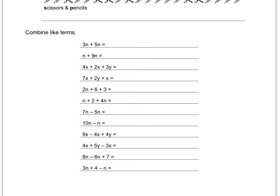On this bottom area, let's try this last one: 3N plus 4 minus N. I like to use the shape method, so I'll put a box around the 3N and the N because they both have N's, and a triangle around the 4. Combining the boxed N terms, what's important is not to miss that that's a negative N. So 3N minus N equals 2N, not 4N. Plus 4 — there's nothing else to combine the 4 with, so I'm done. I box my answer and move on.